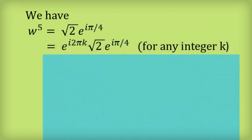Next, with any number, we can always multiply it by 1 — and so that's what I'm going to do as my next step. But instead of 1, I'm going to use a complex number form and multiply what I've got by e to the i 2 pi k, where k is any integer. Because we know that e to the i 2 pi, or 4 pi, or 6 pi, or negative 2 pi — all of those are just equal to 1. So I'm perfectly entitled to multiply what I've got by e to the i 2 pi k.